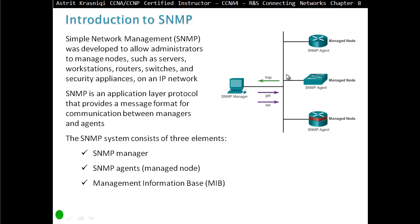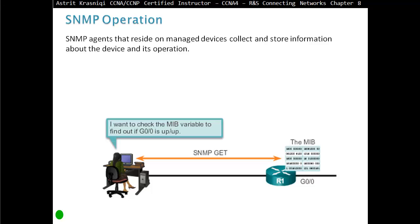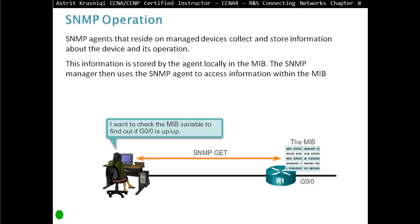SNMP also has a capability similar to syslog, called traps. If something happens, the managed device will send a trap — an unsolicited message — toward the manager. SNMP uses an unreliable protocol and the port number is 162. SNMP agents that reside on the managed devices collect and store information about the device and its operations. This information is stored by the agent locally in the Management Information Base, and the SNMP manager uses the SNMP agent to access information within the MIB.